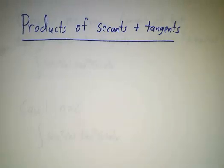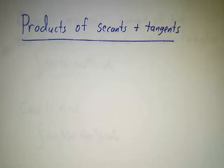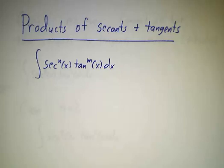We've talked about how the most common type of trig integral involves powers of sine times powers of cosine. The second most common is products of secants times powers of tangents — something of the form secant to the n times tangent to the m, integrated dx.